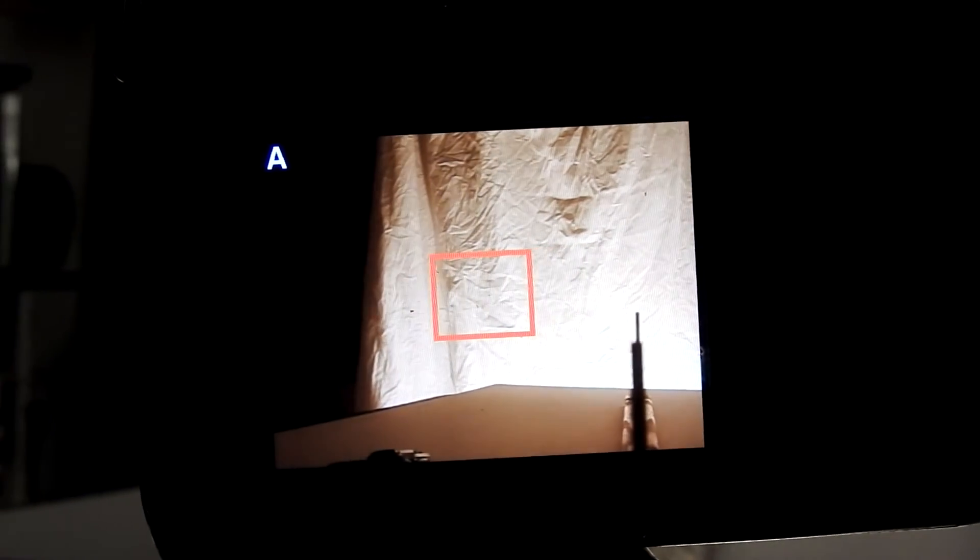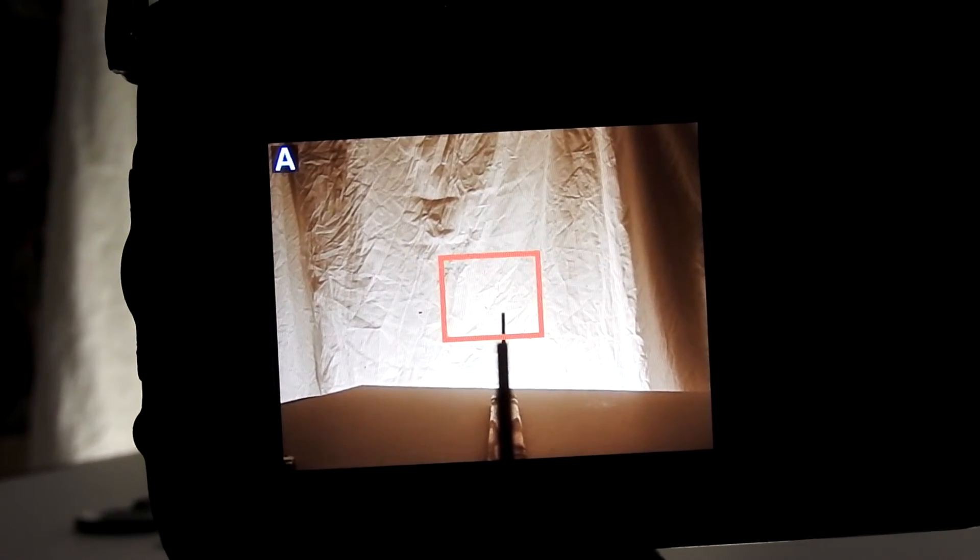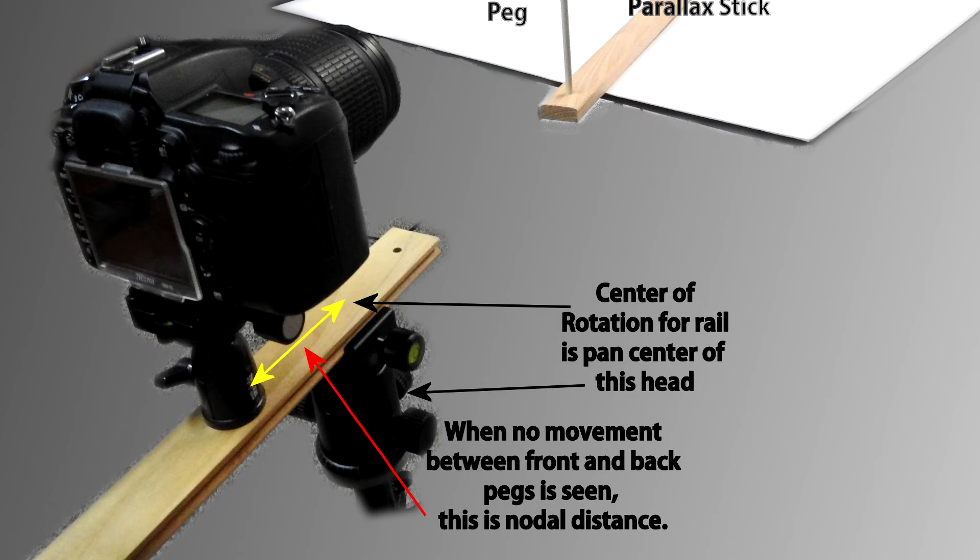Okay now when we rotate the camera from side to side the back peg and the front peg stay in the almost exact same position. We could probably come back just a shade more but not too much. Once you get to the point where you have no relative motion between the front and back peg you can measure the distance between the center of the back mount and the pan rotation center of the front mount and that's your nodal distance.